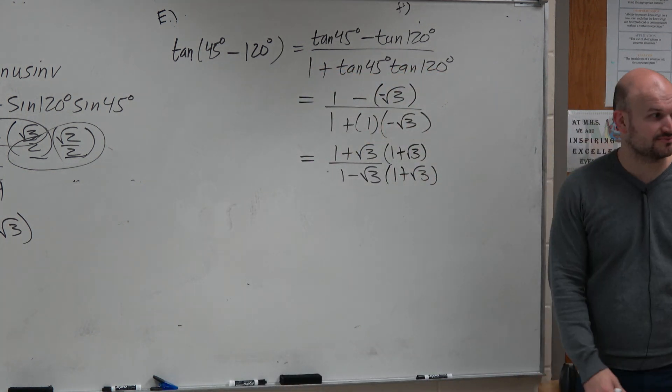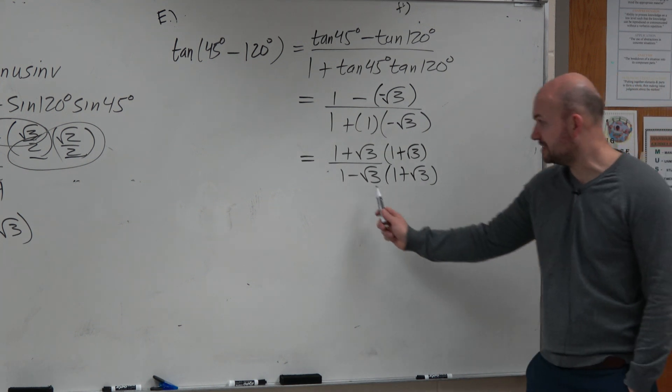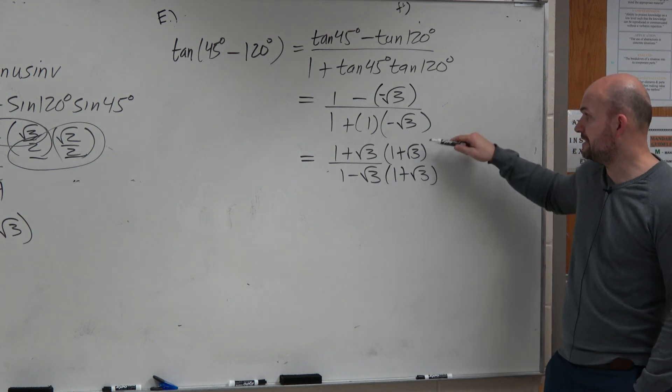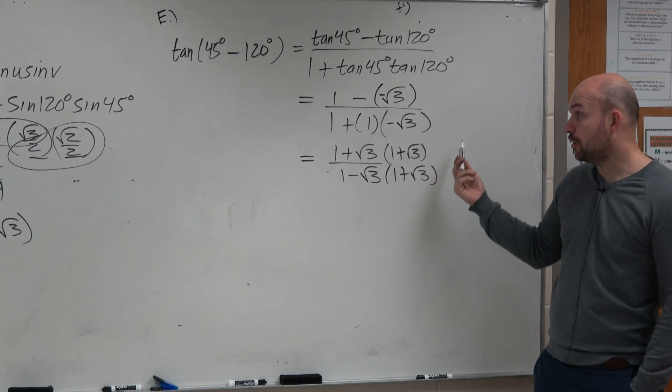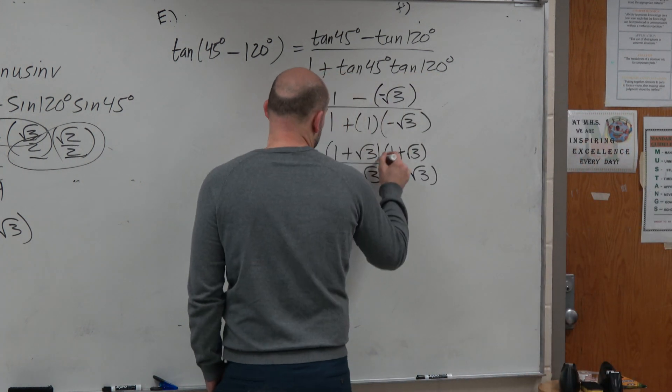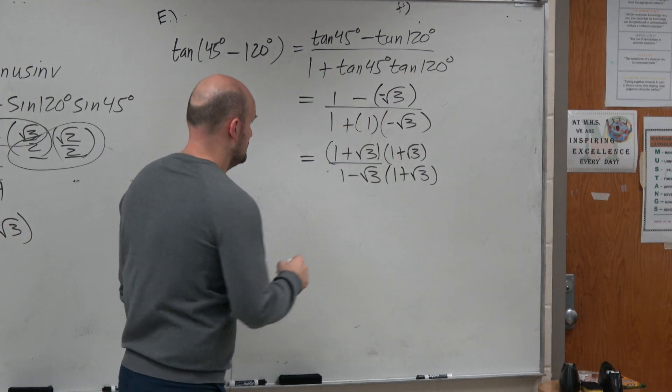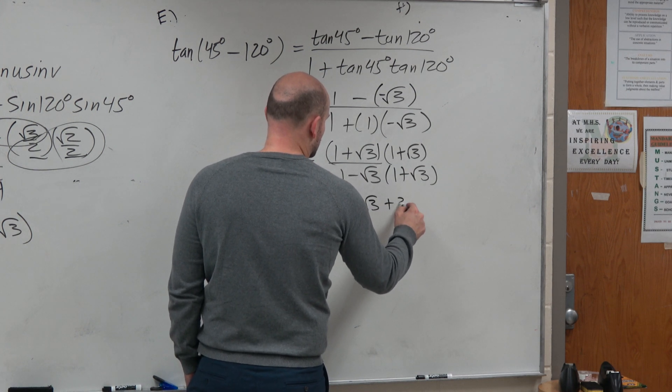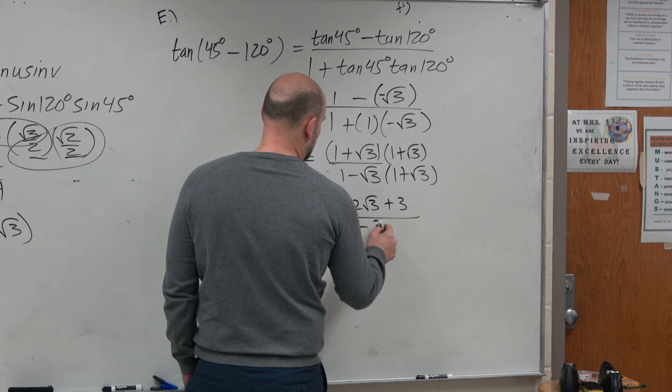You're just going to multiply by the conjugate. Now again, the nice thing about multiplying by the conjugate, that produces a difference of two squares in the denominator. And in the numerator, you just need to apply FOIL. Hopefully, you guys recognize this is a perfect square trinomial. Like this produces the same thing multiplied by itself, right? So therefore, I can write this as 1 plus 2 square root of 3 plus 3 all over 1 minus 3.